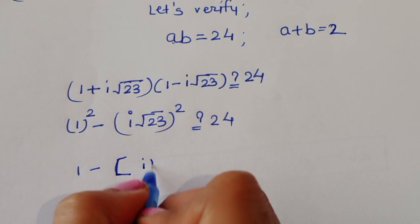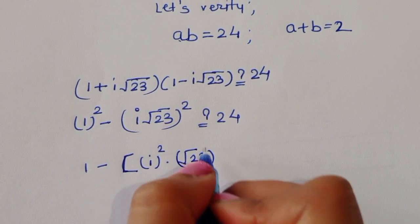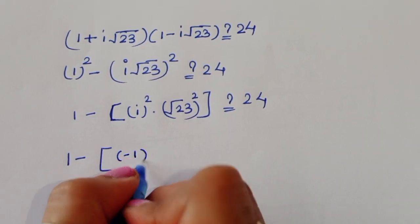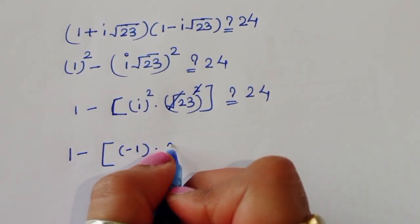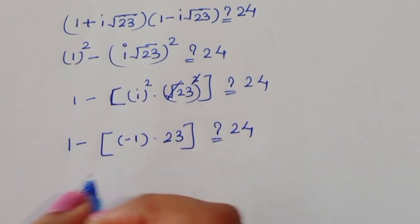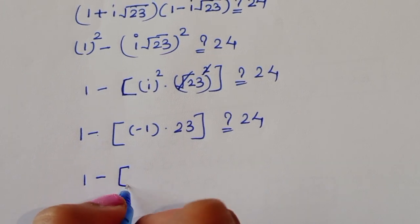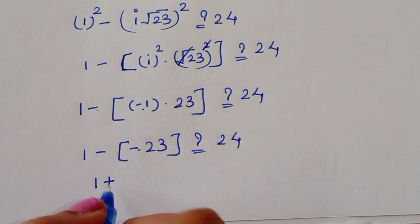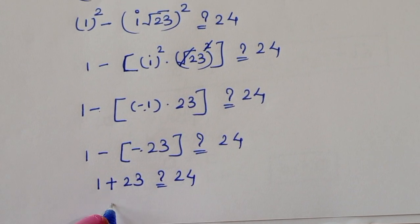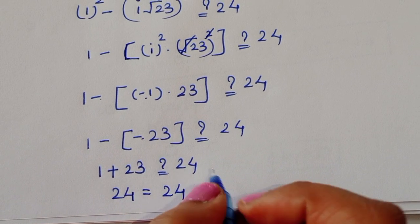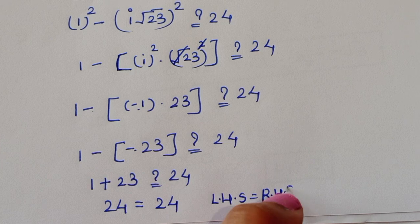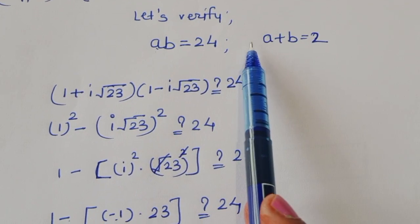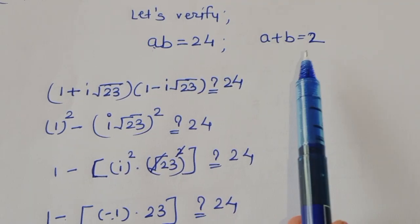Since i squared equals minus 1, we have 1 minus (minus 1)(23) equals 1 plus 23 equals 24. LHS equals RHS, so a1 and b1 satisfy the first equation ab equals 24. Now verifying for a plus b equals 2.